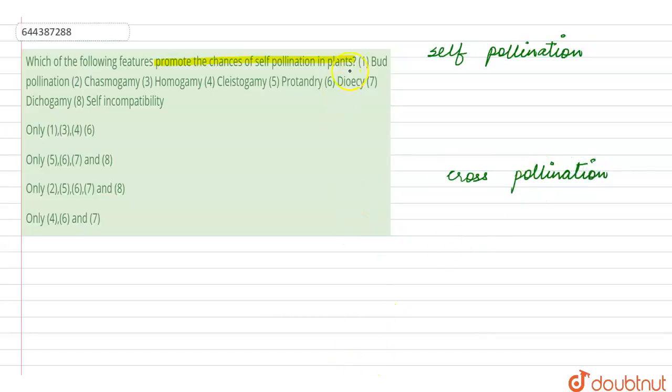Now let's see the terms here. The first one is bud pollination. In bud pollination, the bud will always remain closed and it will never going to open, so in that case the flower will be transferring its pollen grain to the stigma of the same flower. So that means this is self-pollination.